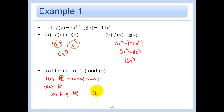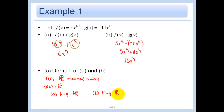In part b, again it's the same thing. Since f is not restricted and g is also not restricted, then f minus g is not going to be restricted — in other words, all real numbers. Note: this is just because I was doing a cube root, so I had no restrictions.